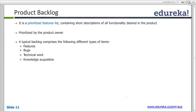Now this backlog is maintained by the product owner. The main task of the product owner is to keep this product backlog prioritized and up to date. If there are certain requirements which were initially needed and are no more needed, it's the duty of the product owner to remove them. And if there are more requirements coming in, it's their duty to add them.